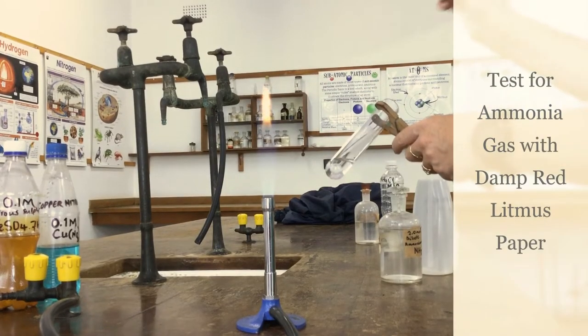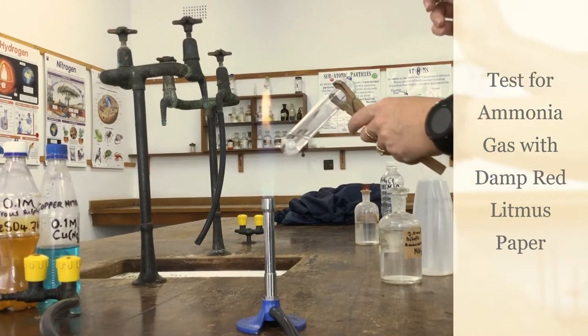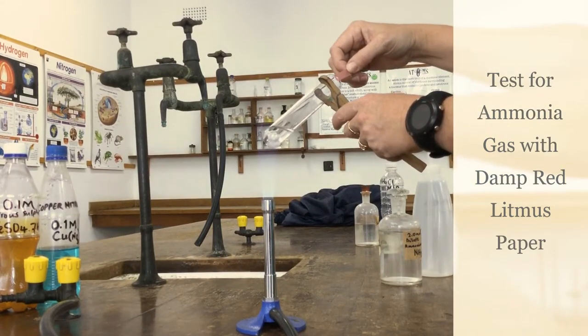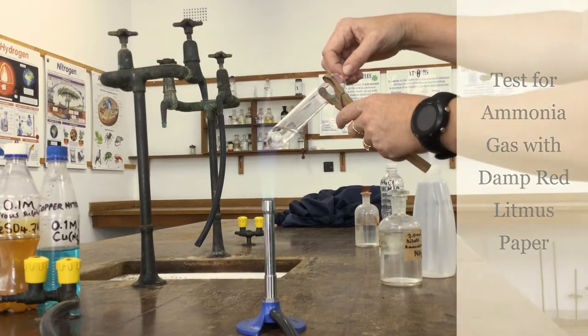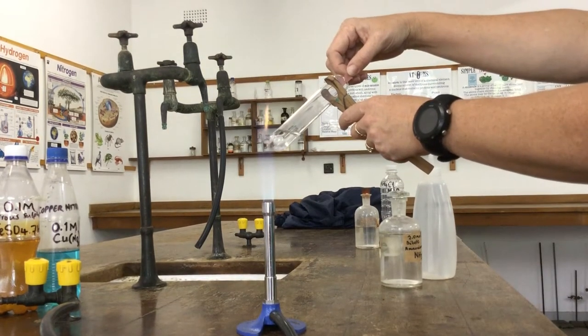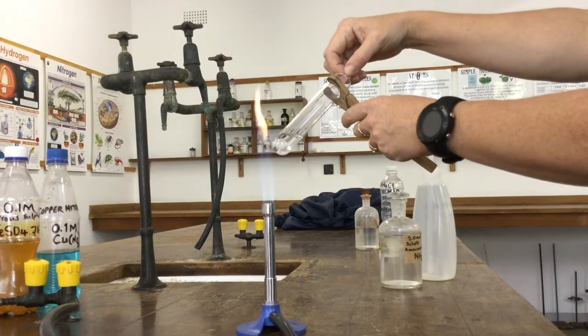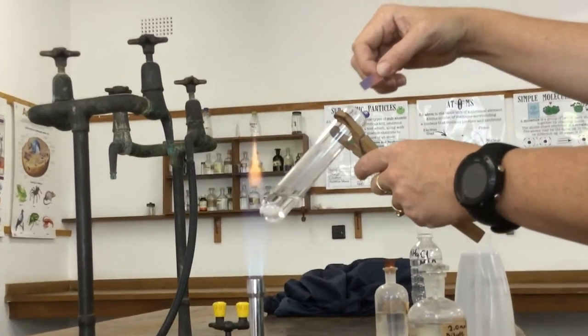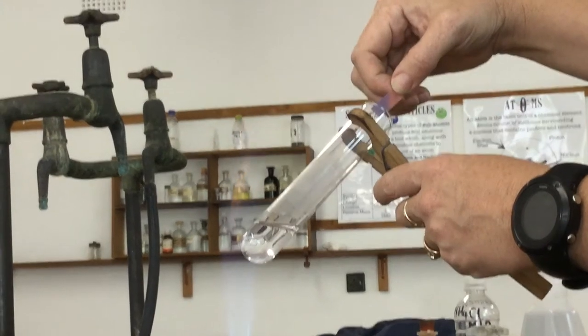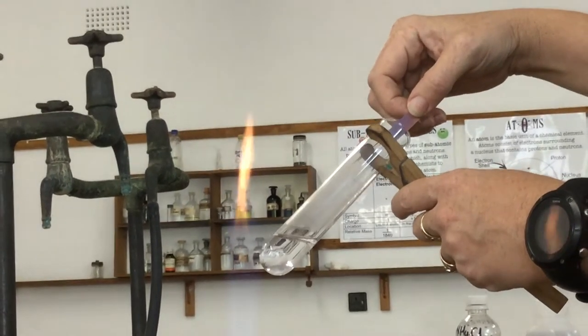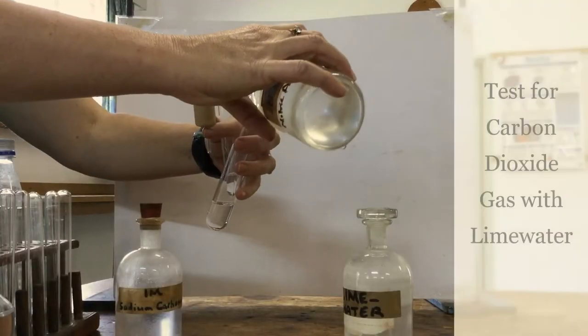Test for ammonia gas with damp red litmus paper. If ammonia gas is produced on warming, it should turn the litmus paper blue. There we see already the litmus paper is starting to turn from pink to blue as ammonia gas is produced. Add some more nitric acid.